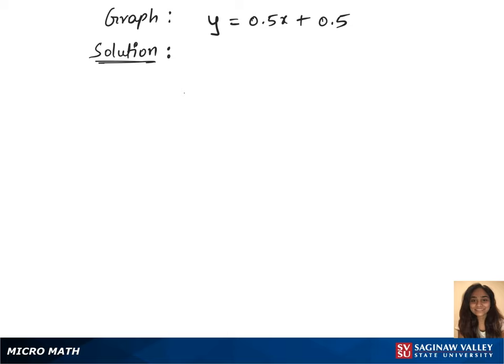To solve this question, we at least need two points to plot this equation on the graph. Let's get our first point by substituting x = 1 in the equation, which gives us y = 0.5 times 1 plus 0.5, which gives us y = 1. Our first point will be (1, 1).